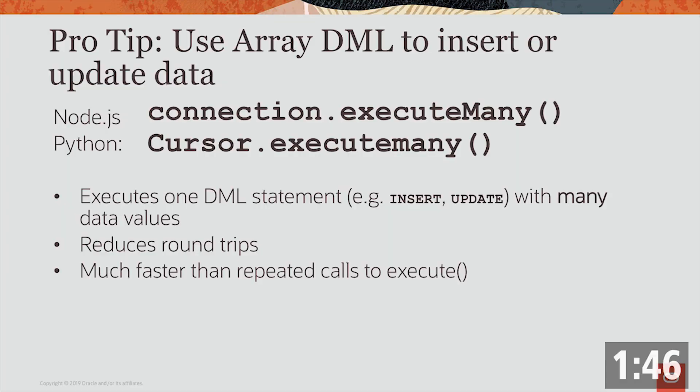If you're using Python, Node.js, or C languages, they have something we call executemany in those languages. Array DML lets you insert or update data into the database very, very efficiently. So in Python and Node, we call it executemany — that's the function name. This is executing one statement with many data values.